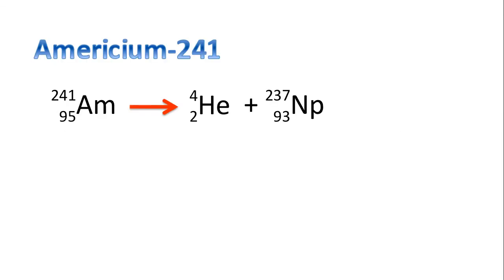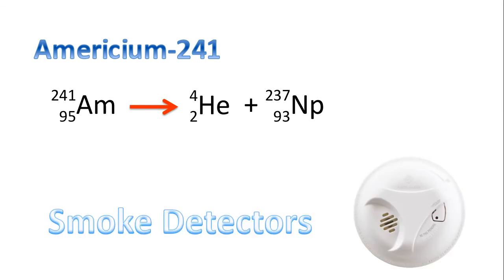Finally, I want to talk about one common element called americium-241. It is radioactive and undergoes alpha decay, as you can see from the equation. This is commonly found in ionization smoke detectors in your home — so if you have a smoke detector, there may be a chance it contains americium-241. I hope you enjoyed today's video. Have a great day. Bye-bye.